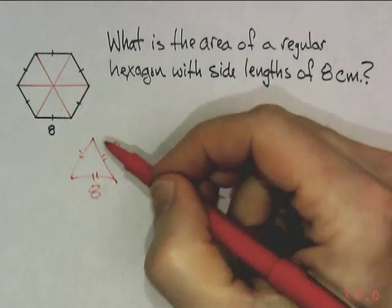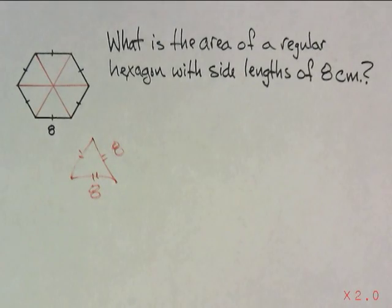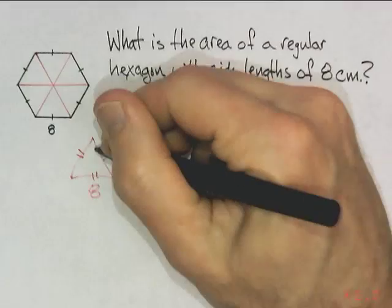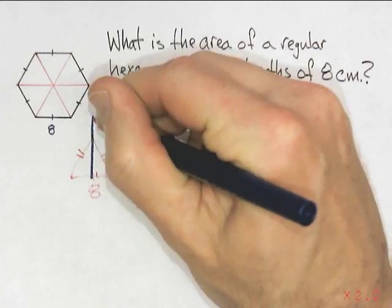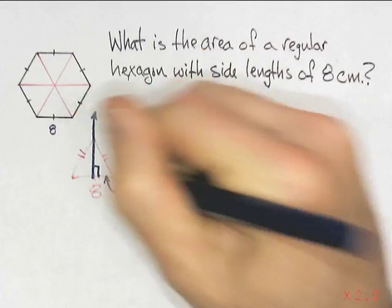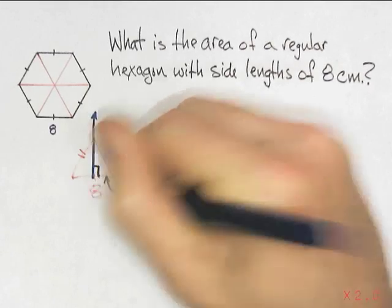And since it's equilateral, a special kind of isosceles triangle, we know that the Euler line goes straight down there, perpendicular to the base, cutting this side in half, giving me 4.